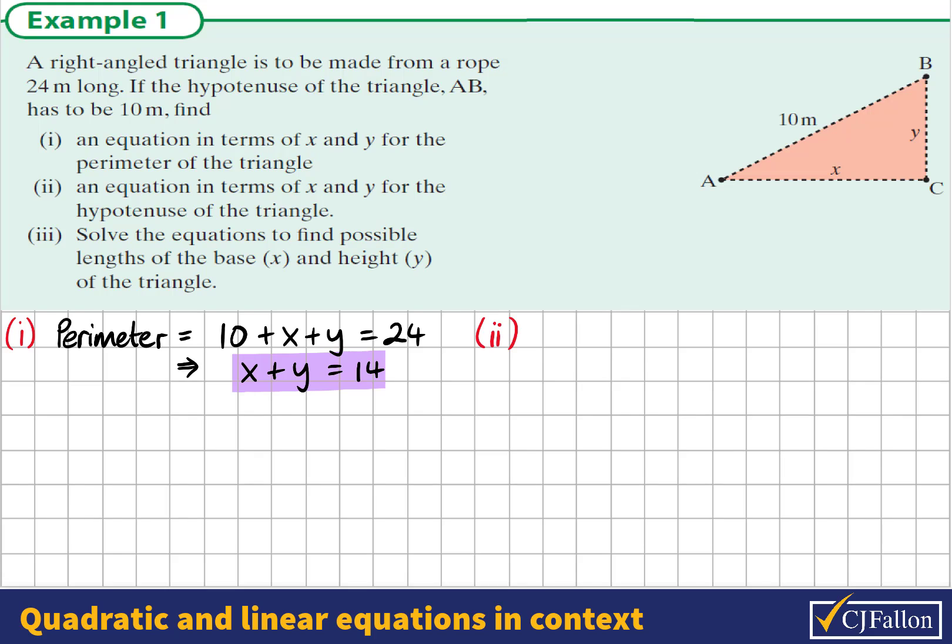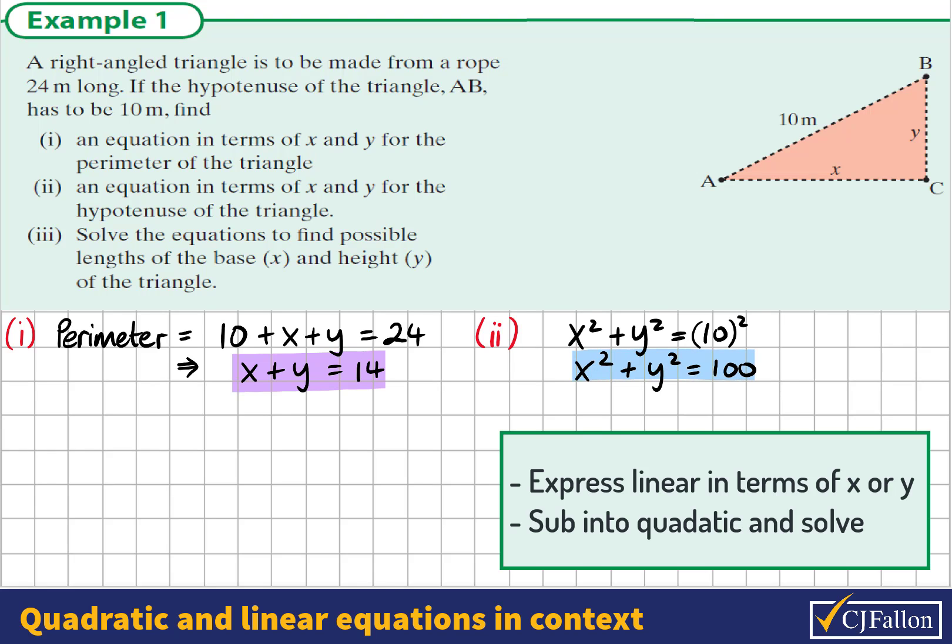In part two, we're asked for an equation in terms of x and y for the hypotenuse of the triangle. Pythagoras' theorem tells us that x squared plus y squared would be equal to 10 squared. The hypotenuse squared is the sum of the other two sides squared added together. Therefore, x squared plus y squared must be equal to 100. This is our second equation.